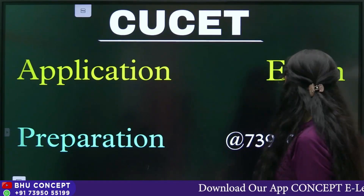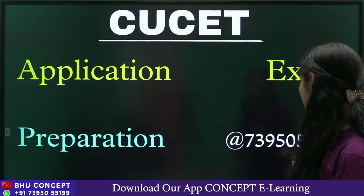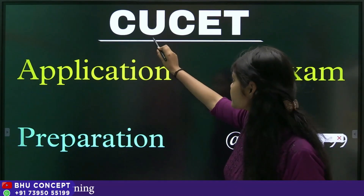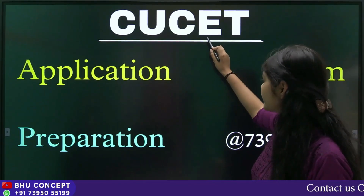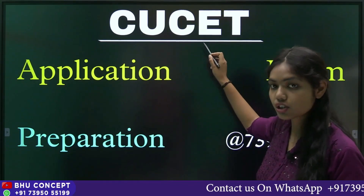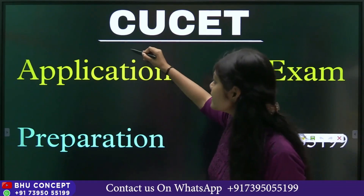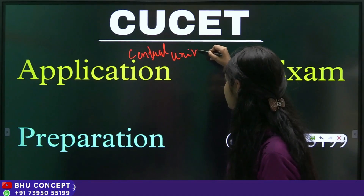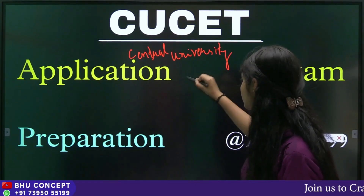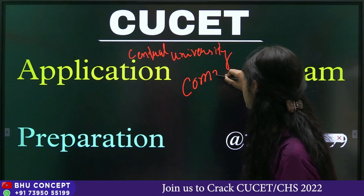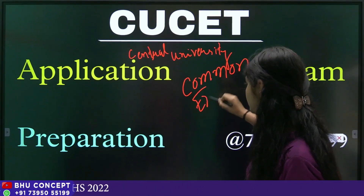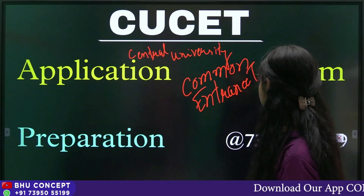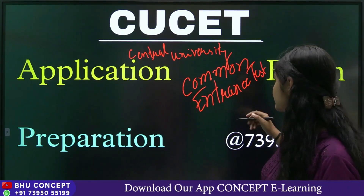What is CUCET? CUCET is basically: C stands for Central, U stands for University, C stands for Common, E stands for Entrance, and T stands for Test. So in total, it is the Central University Common Entrance Test.